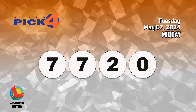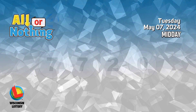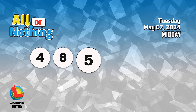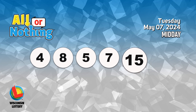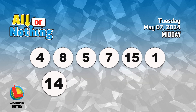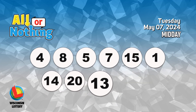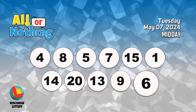The All or Nothing numbers are four, eight, five, seven, fifteen, one, fourteen, twenty, thirteen, nine, six.